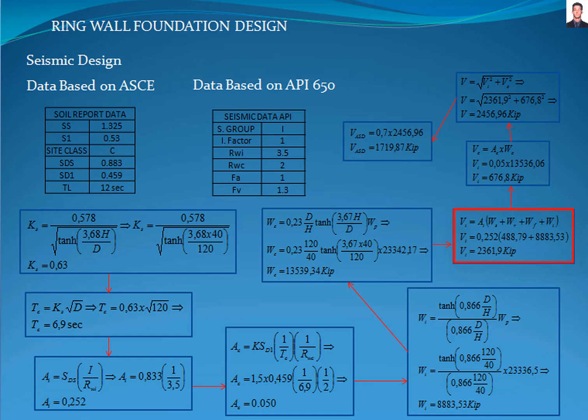The next step is to calculate the lateral force due to the impulsive spectral acceleration parameter PI with the equation E6.1-2, where WS is the weight of the shell, WR is the weight of the roof, WF is the weight of the floor, giving a result of 2,361.9 kilopounds.